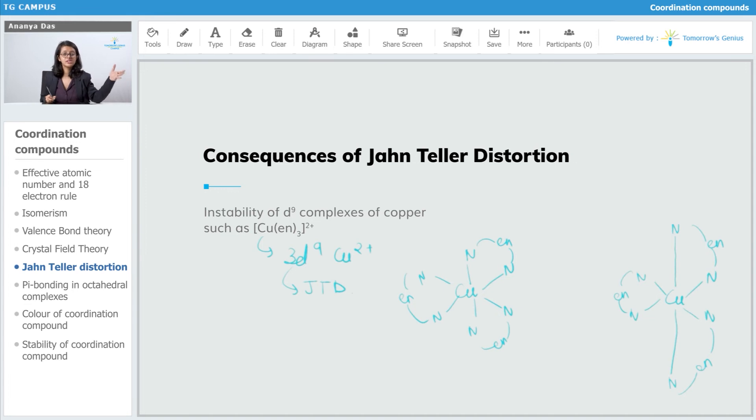This destroys the stability which is provided by the ring. Rings provide stability to a structure, but this entire thing, the distortion of the bonds, this destroys the stability of the ring and therefore it destroys the stability of the d9 complexes in which there is a ring present.